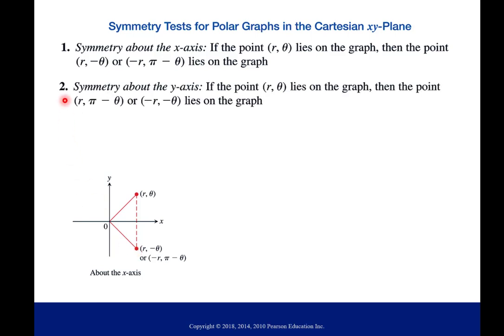The second symmetry is about the y-axis. So your point (r, θ) is on your graph, but then also the point negative r, negative θ is on your graph. And so in this case, you have this type of symmetry where you have a point (r, θ) but then directly across or flipped over the y-axis is another point on your same graph.